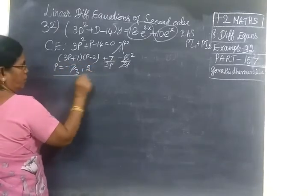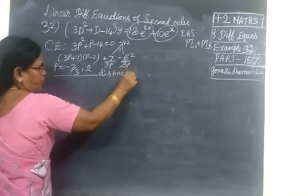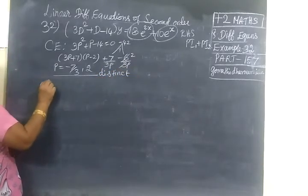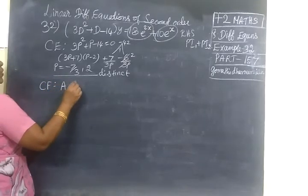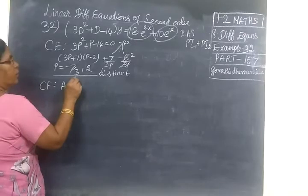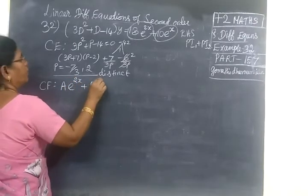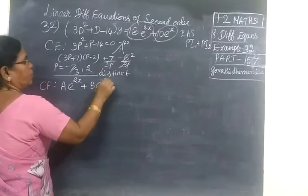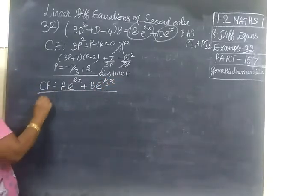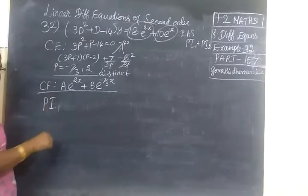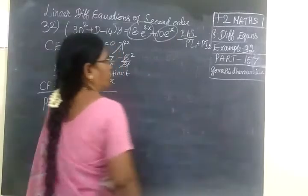So the roots are distinct. The complementary function equals to Ae^(p1·s) plus Be^(p2·s), which is Ae^(2s) plus Be^(-7/3·s). So complementary function is over. Next you have to find PI1 and PI2 because we have two terms in R.